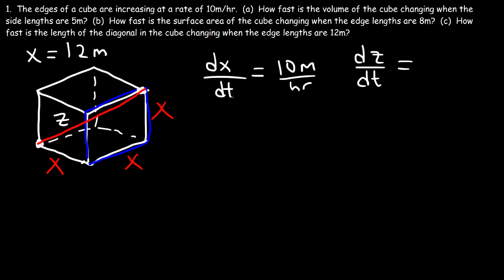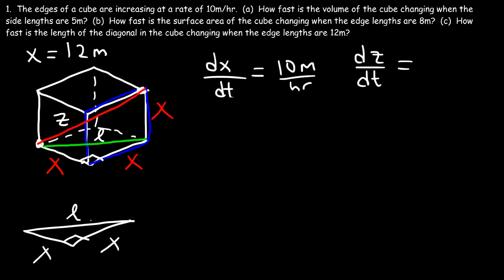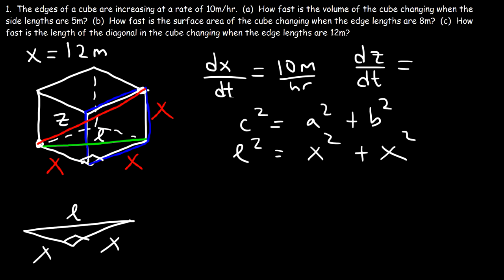How can we come up with an equation relating the diagonal z to x? First, we draw another diagonal at the bottom face of the cube — call it L. That forms a right triangle with sides x, x, and hypotenuse L. According to the Pythagorean theorem (c² = a² + b²), L² = x² + x².